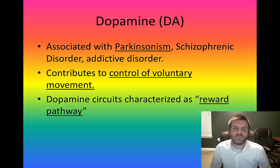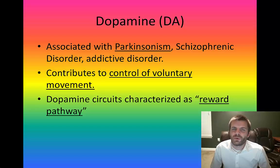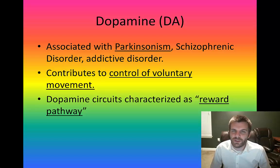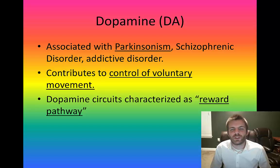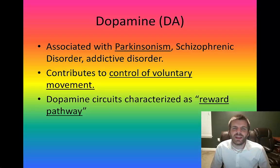Next up is dopamine, abbreviated DA. Dopamine is attributed to a number of different things. An excess amount of dopamine — known as the dopamine hypothesis — is believed to be one of the causes of schizophrenia. Dopamine is also associated with Parkinsonism when there is too little of it. Additionally, dopamine is the reward neurotransmitter; its circuits are part of the reward pathway, and it contributes to the control of voluntary movements.